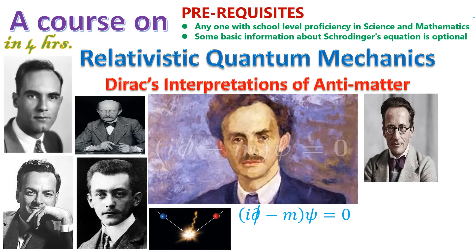It has become the fundamental component of the development of the Standard Model. The equation also predicted the existence of a new form of matter — that is, antimatter — which was experimentally confirmed a few years later. Additionally, it provided a theoretical basis for Pauli's phenomenological theory of spin, which involved multiple components of the wave function.